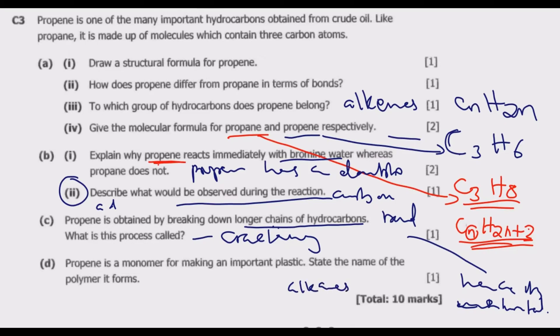Question (d): Propene is a monomer for making an important plastic. State the name of the polymer it forms. The polymer that it will form is known as polypropene. Remember when you're naming the polymer, you just add the word 'poly' then the name of the monomer. In this case the monomer is propene.